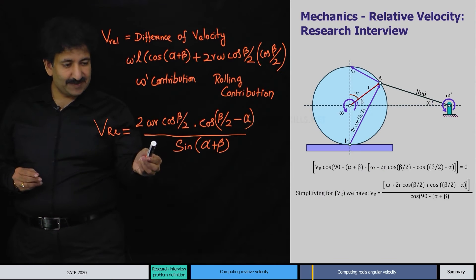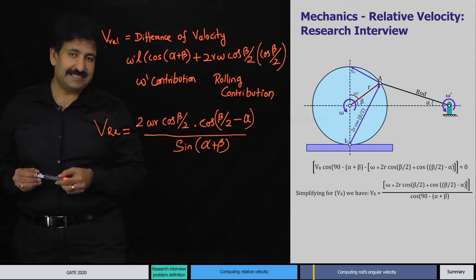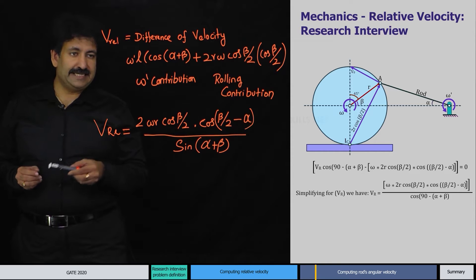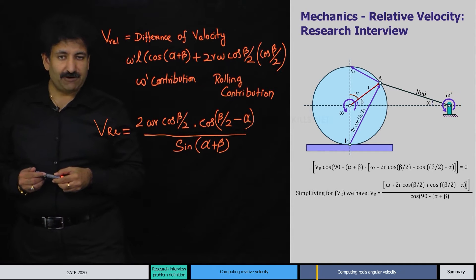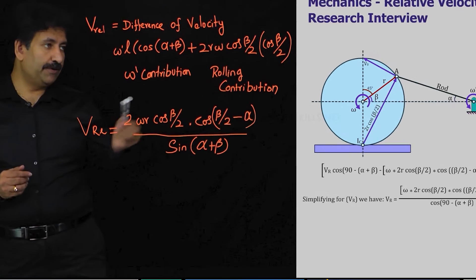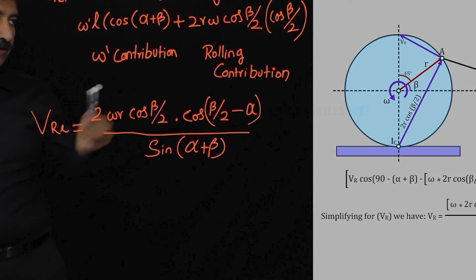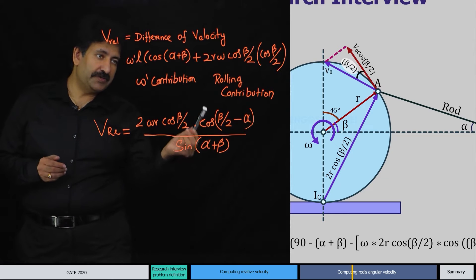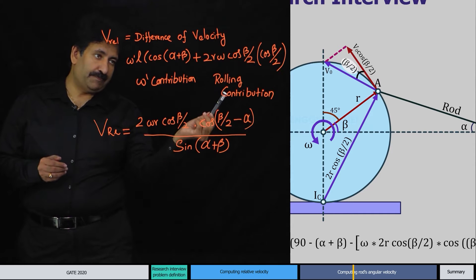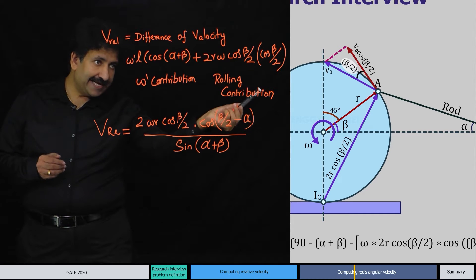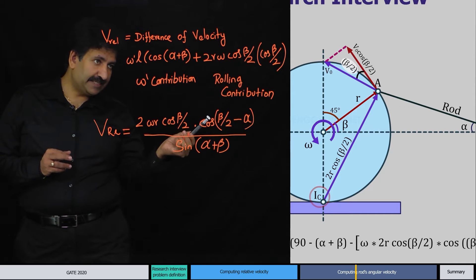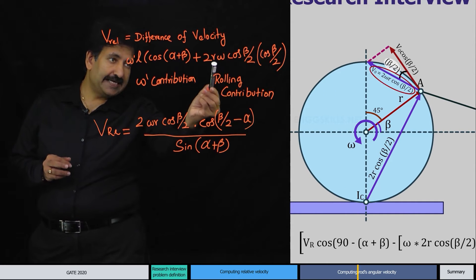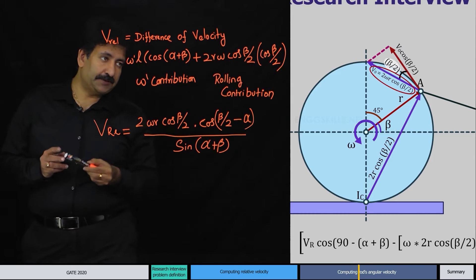In order to utilize this particular expression of relative velocity we need to express the relative velocity in terms of omega dash. The velocity of the roller at point A, since the instantaneous center of rotation is characterized by zero velocity, is nothing but omega into 2r into cos(beta/2).